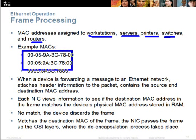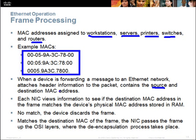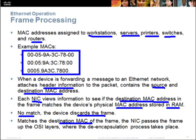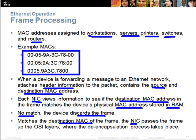When a device forwards a packet to the Ethernet network, it attaches the source and destination MAC address to the frame header. When the frame reaches the computer, the network interface card checks whether the destination MAC address in the frame matches the device MAC address stored in RAM. If it does not match, it will discard the frame. However, if it does match, the NIC passes the frame up through the OSI layers to de-encapsulate and retrieve the data.